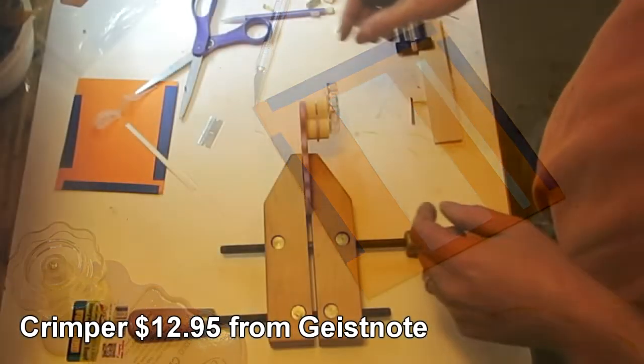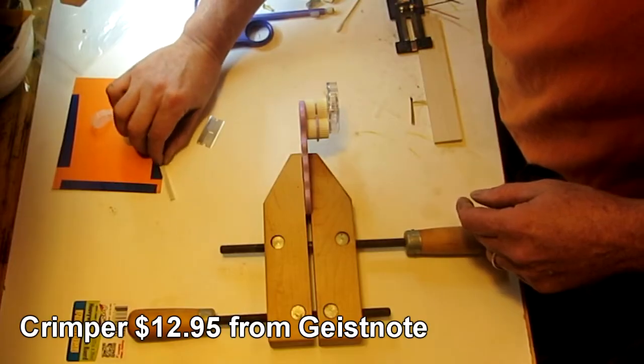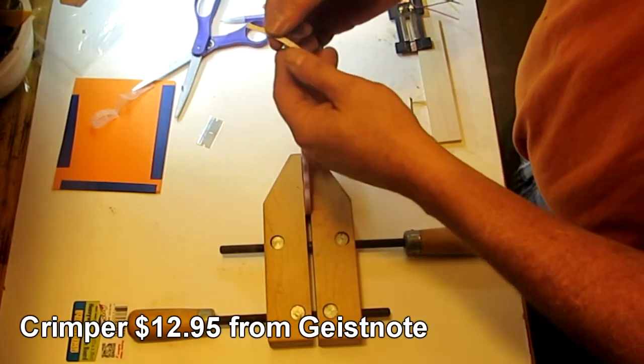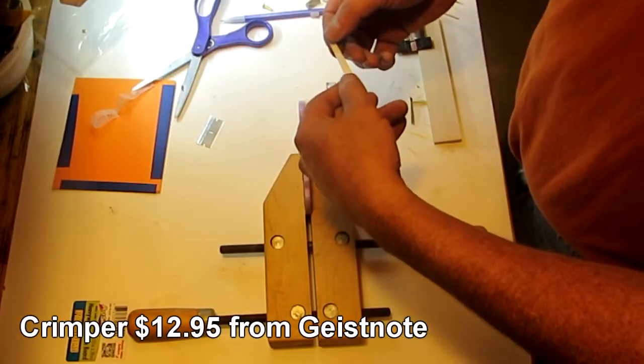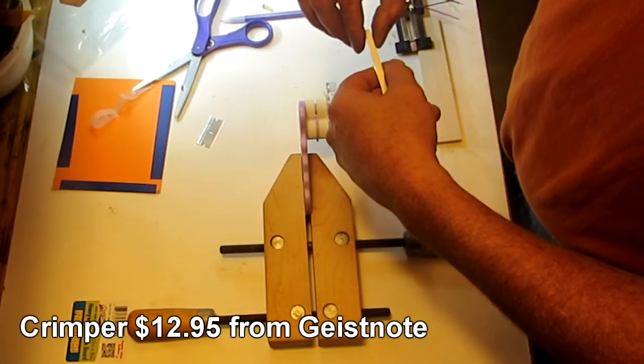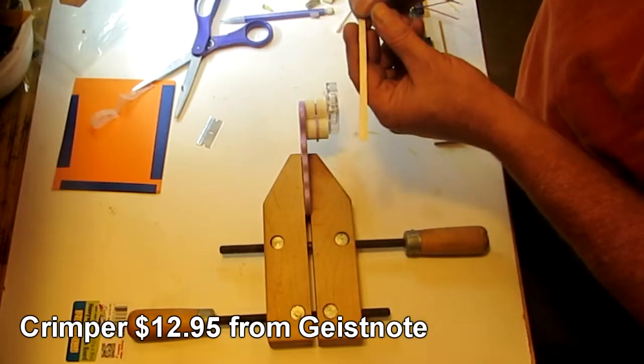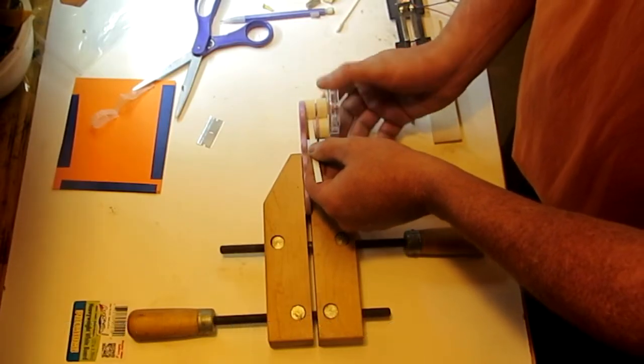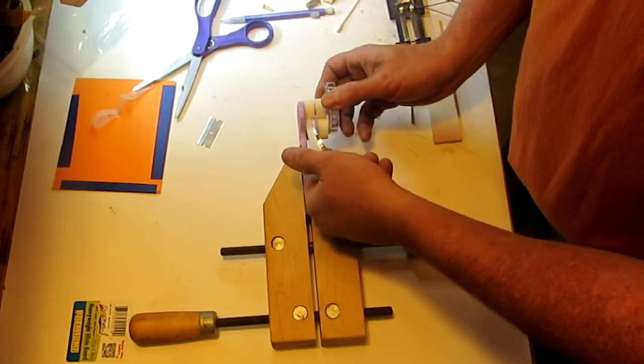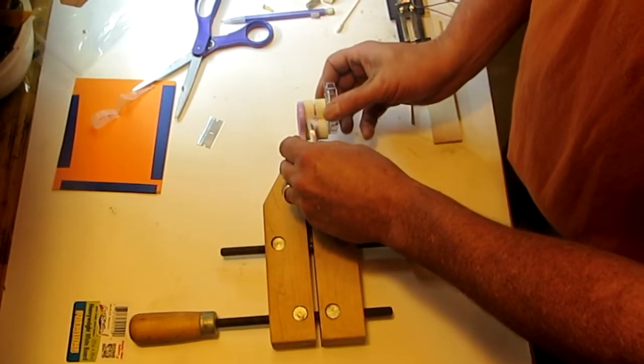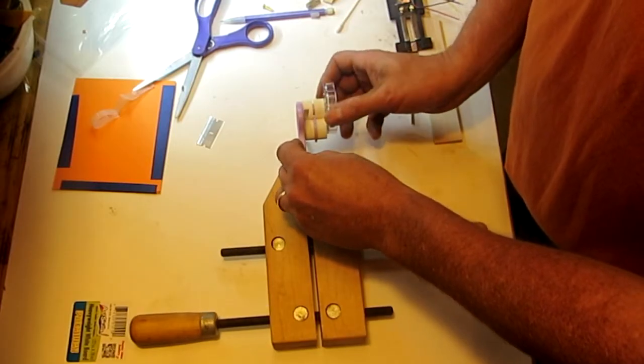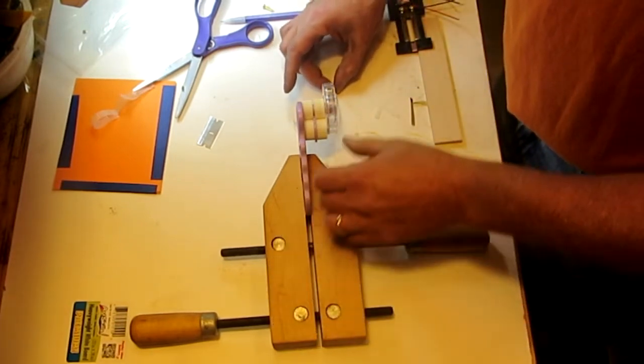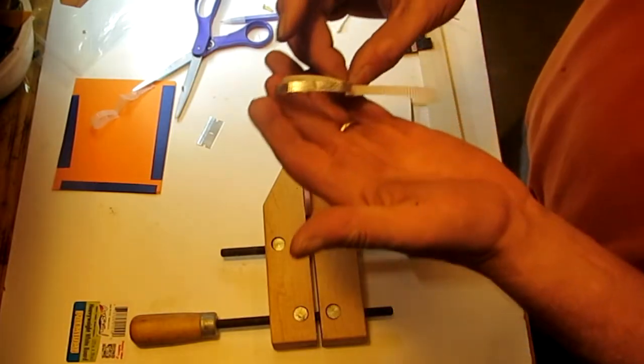There I've got my strip. It's still in the paper. I put my crimper in a clamp so I didn't have to hold both the crimper and the foil at the same time. Here we are. That looks pretty good I think.